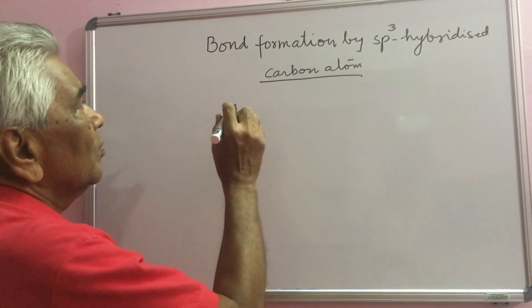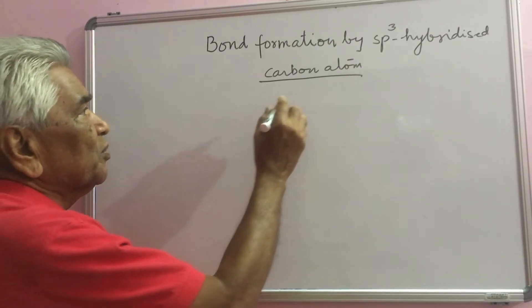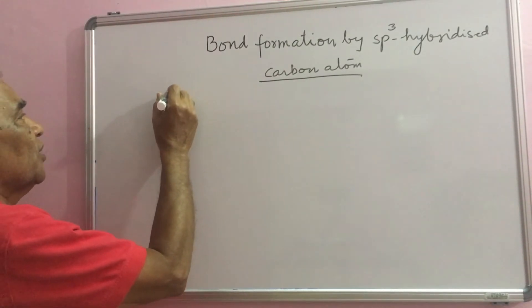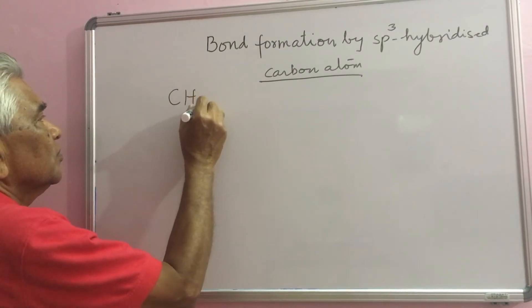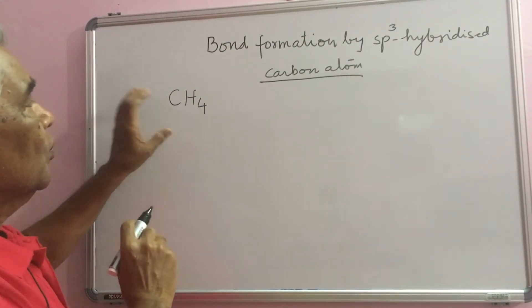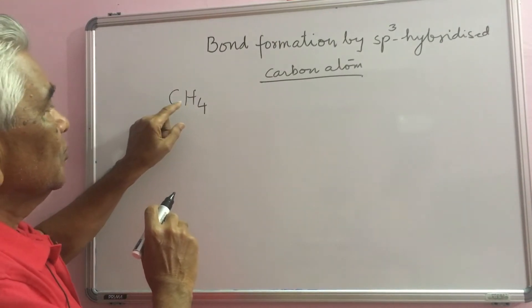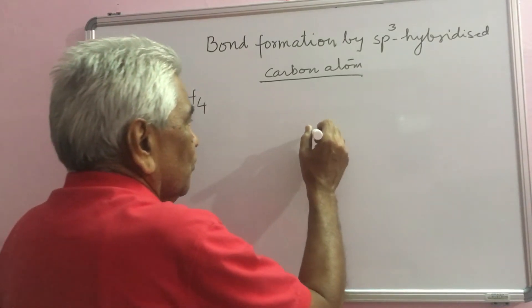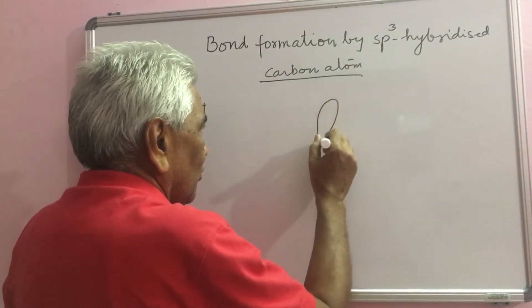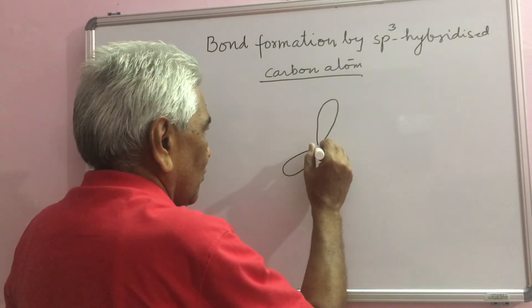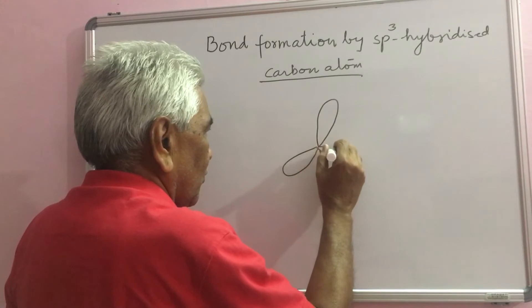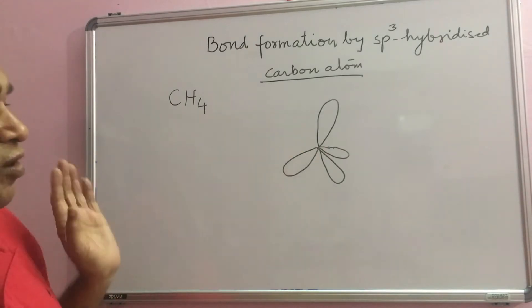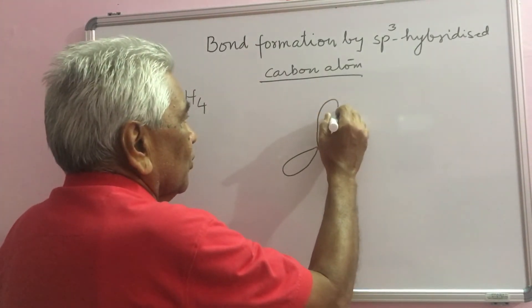We will see bond formation by sp3 hybridized carbon atom. The simplest molecule is methane, in which carbon is bonded to 4 hydrogen atoms. This will undergo sp3 hybridization forming 4 sp3 hybridized orbitals having 1 electron each.